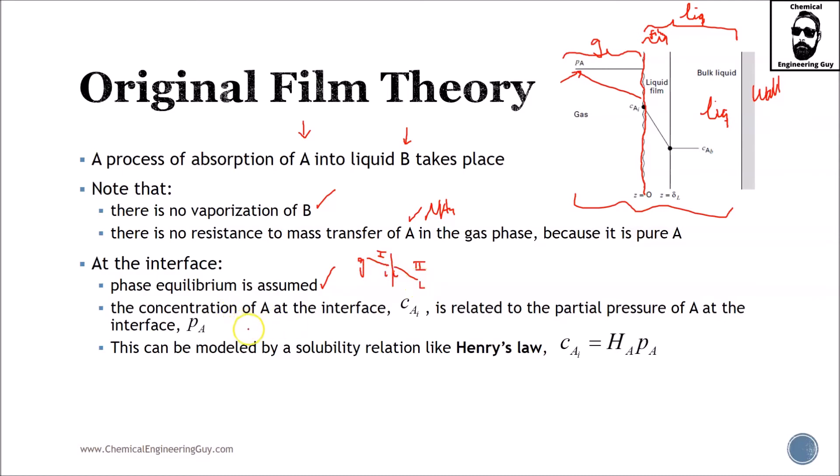The concentration of A at the interface, CA,i, is related to the partial pressure of A at the interface. Henry's law is going to help us model this. We can calculate the concentration of the component if we have the Henry's law constant.